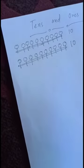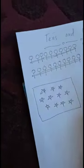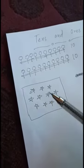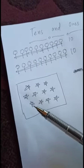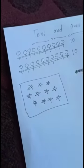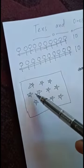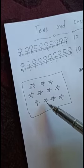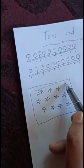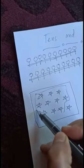Now we have a box full of stars. Let's count and make a group of ten. We have to count 10 stars and make a bundle. Let's count: one, two, three, four, five, six, seven, eight, nine, ten. In ko hume circle karna hai — in ten stars ko hume circle karna hai.